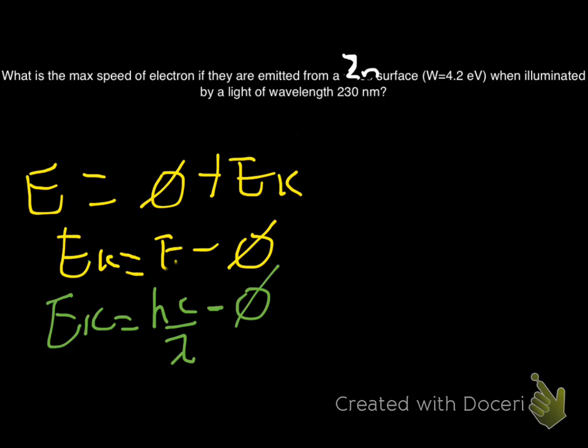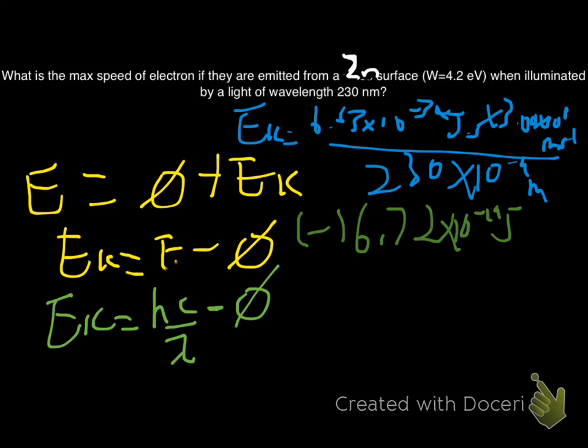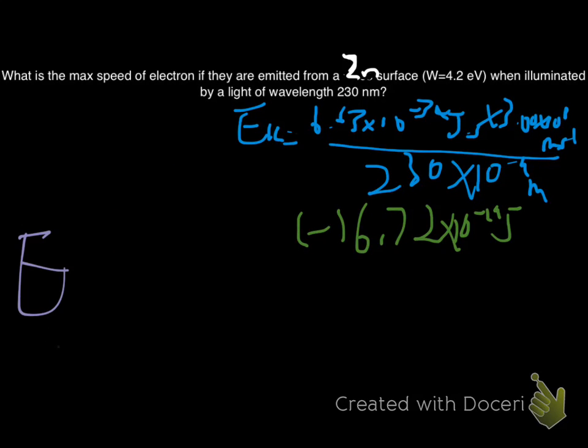I can substitute in my values. So EK is equal to Planck's constant times the speed of light over the wavelength. Subtract the work function, 6.72 times 10 to the negative 19 joules. And that should get me of kinetic energy of 1.97 times 10 to the negative 19 joules.